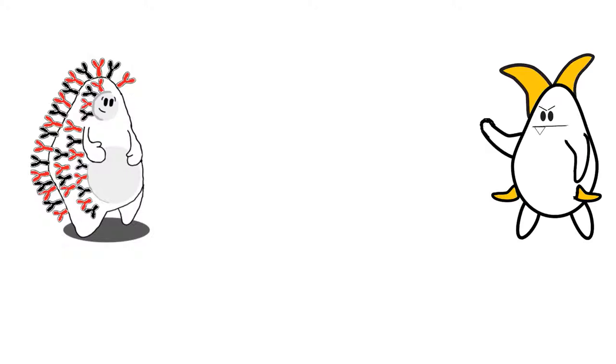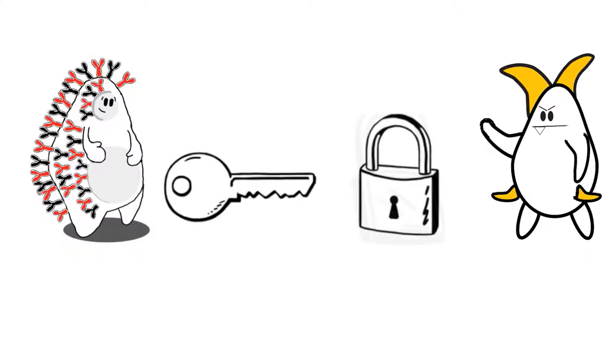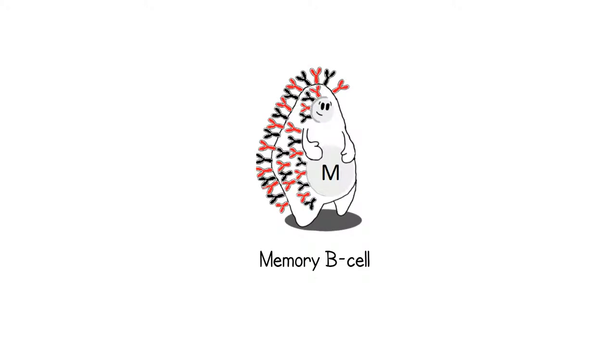Effector B cells refer to cells which are able to mass-produce antibodies specific to the antigen they have encountered. Using a lock and key method, these effector B cells are able to bind to antigens and neutralize their effects. Memory B cells are created for the purpose of recognizing the same types of antigens within the body.